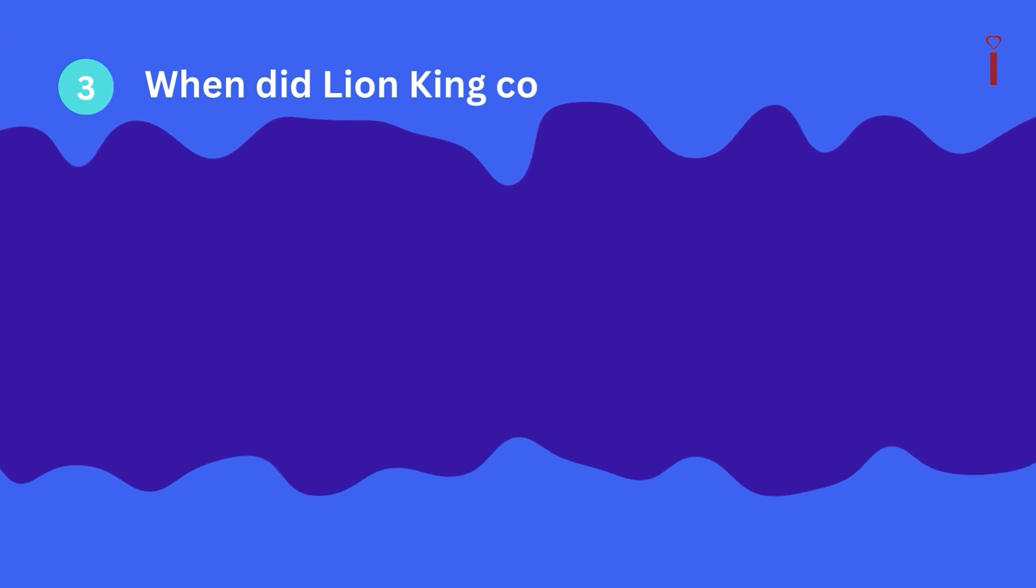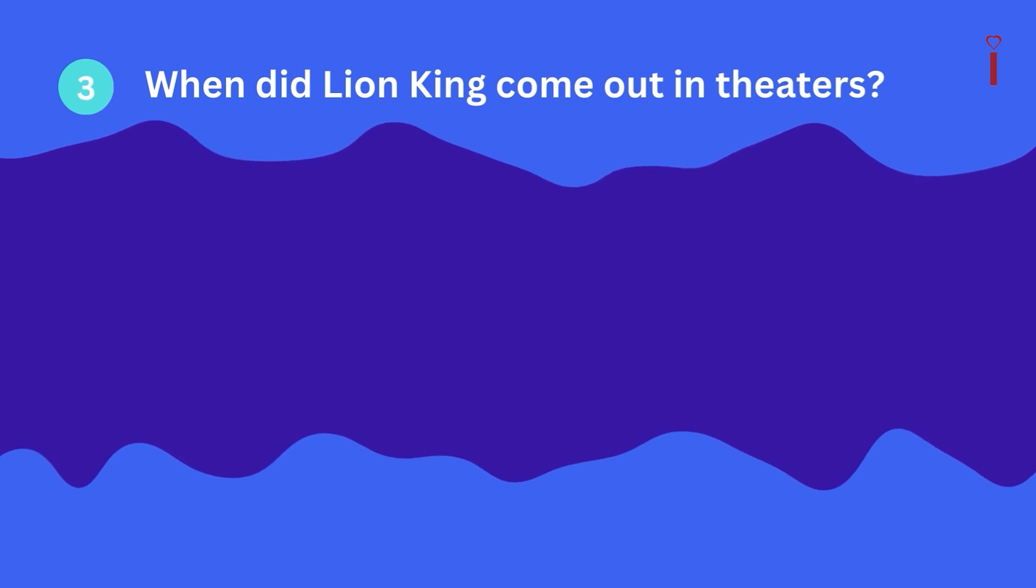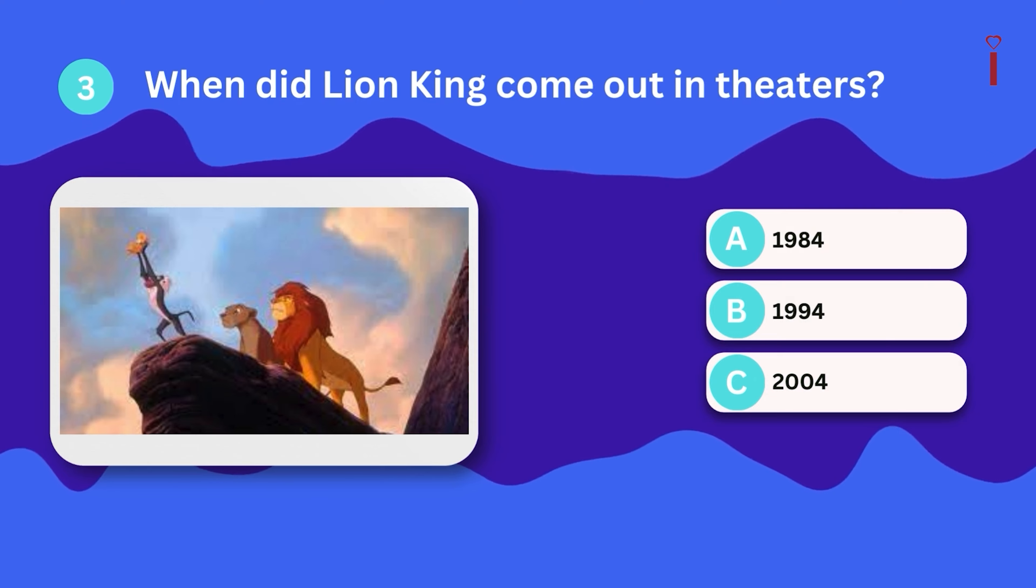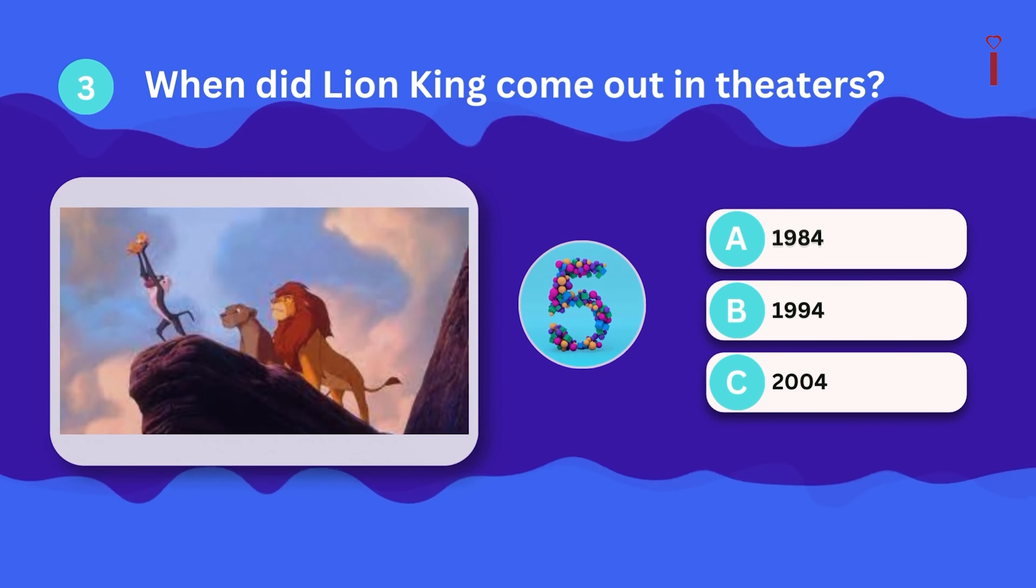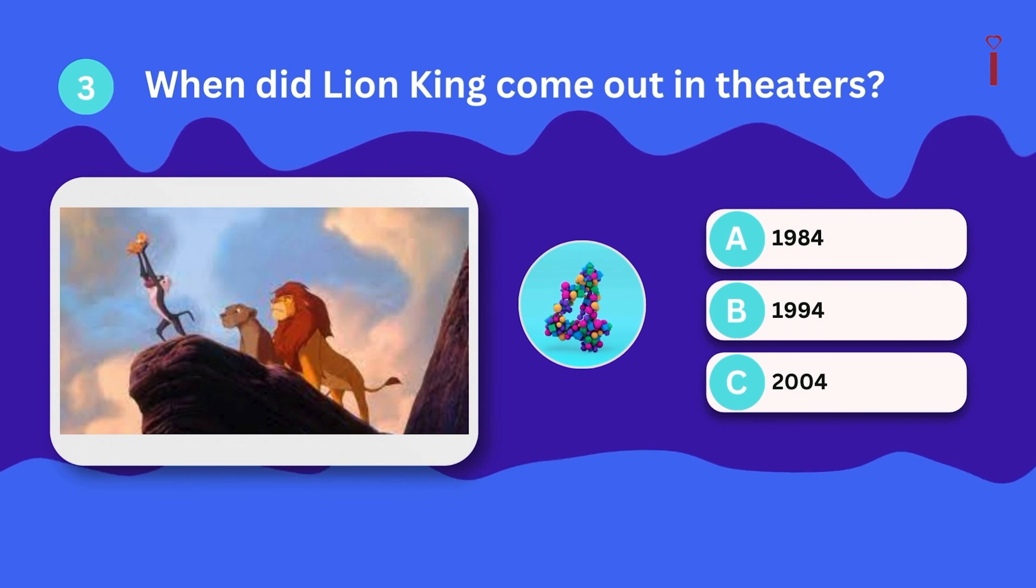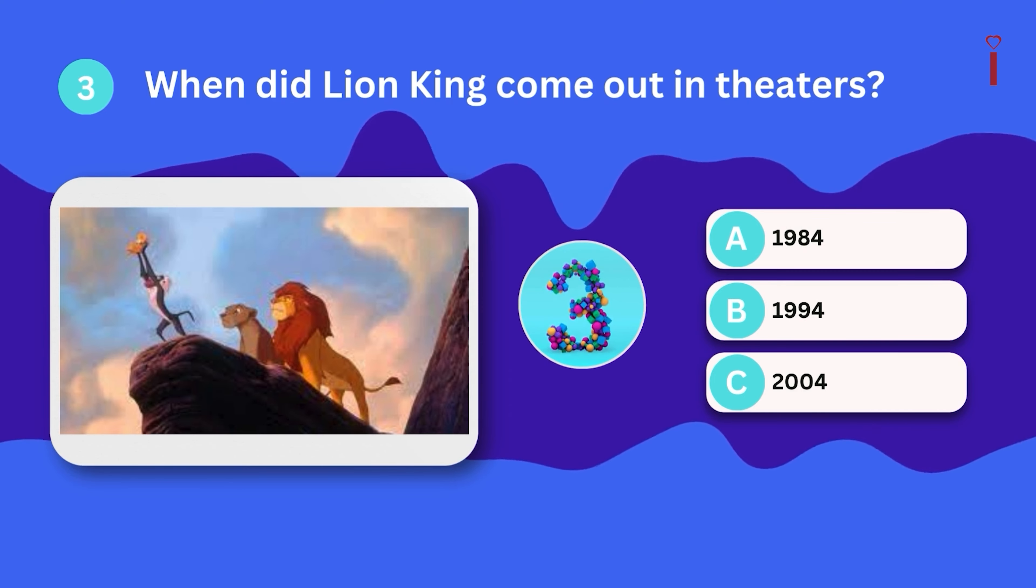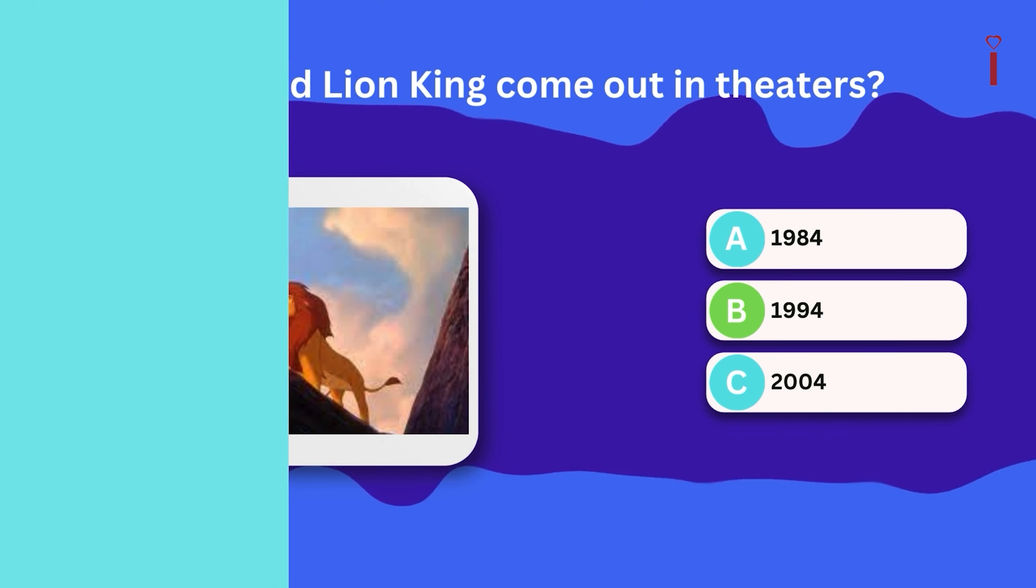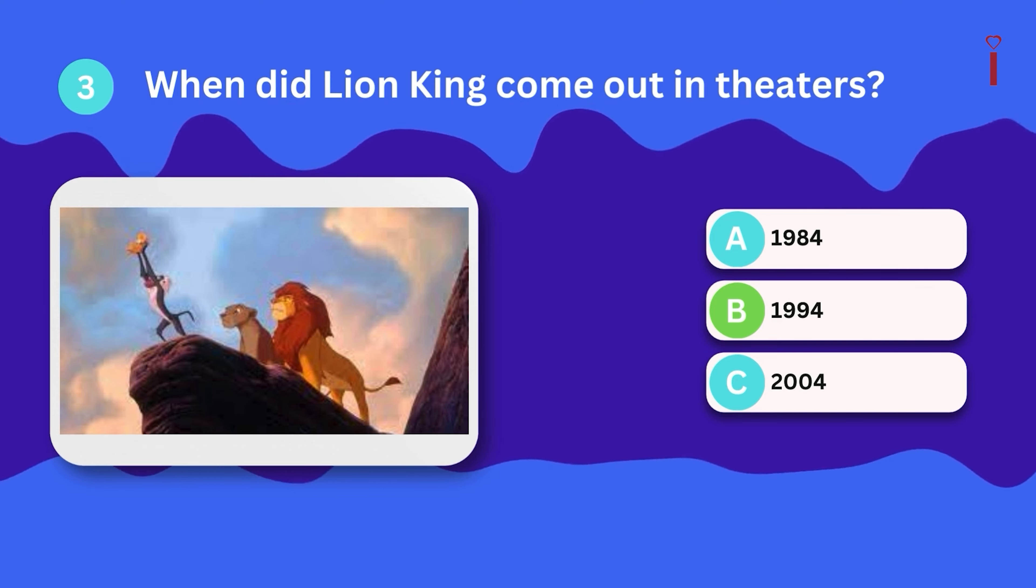Question number three. When did Lion King come out in theaters? 1984, 1994, or 2004? It was released on June 15, 1994.